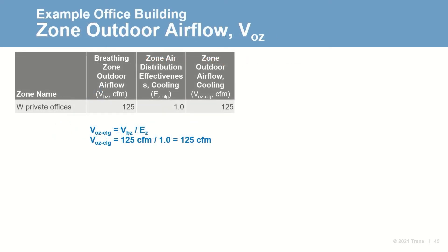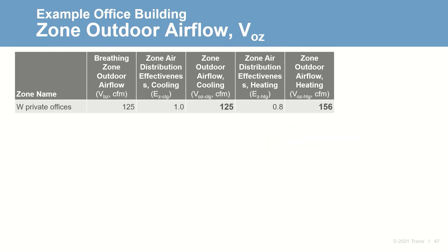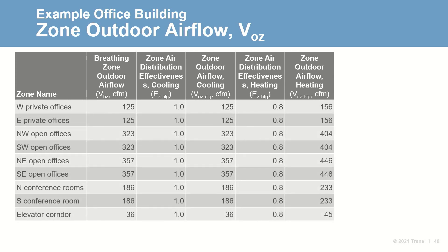Returning to our example office building, the breathing zone outdoor air flows are then divided by the zone air distribution effectiveness values during cooling operation to determine the required zone outdoor air flow. For cooling, 125 CFM is divided by 1.0, resulting in 125 CFM. Using the heating zone air distribution effectiveness value, the calculation is repeated: 125 CFM divided by 0.8, yielding 156 CFM. In this example, the zone air distribution effectiveness value is different — 1.0 during cooling and 0.8 during heating — so the zone outdoor air flow values differ between heating and cooling operation. This calculation is repeated for each zone.